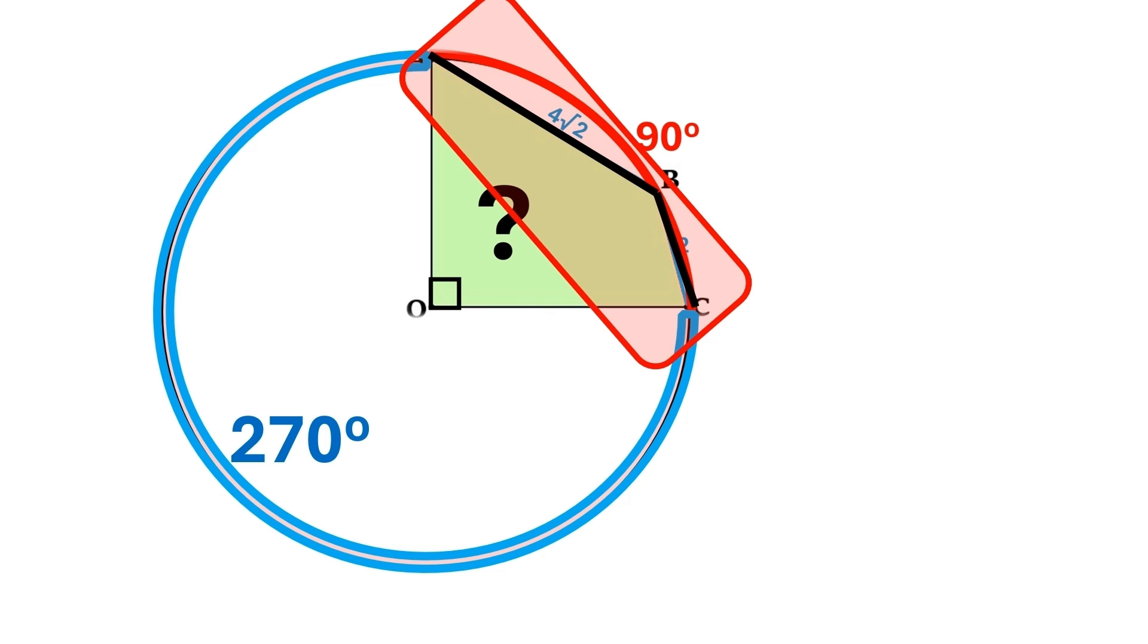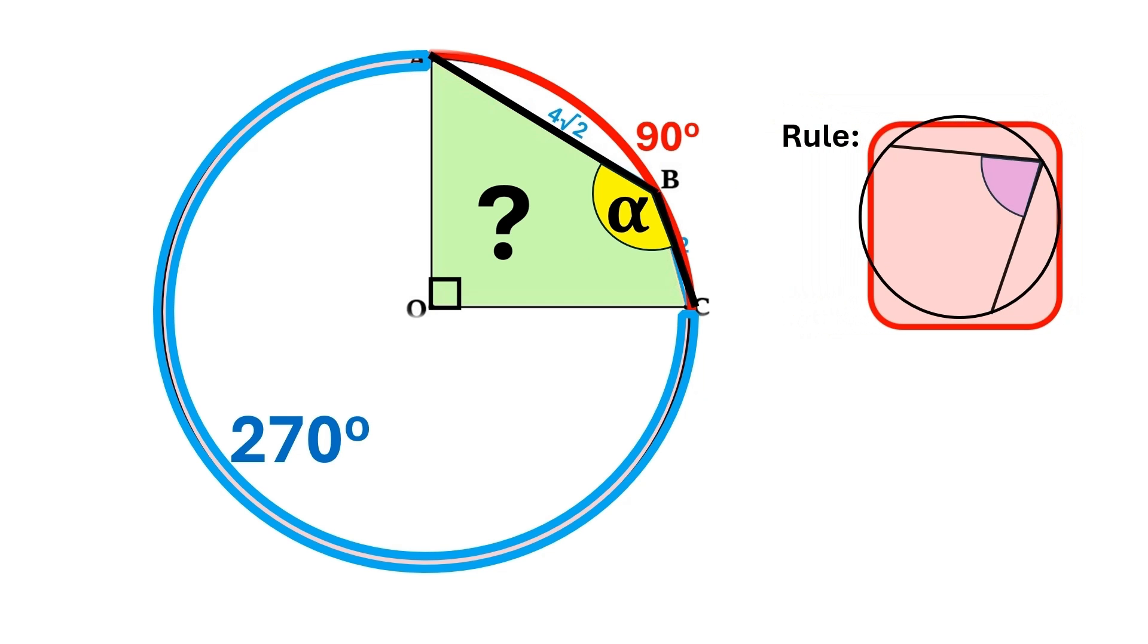Now, between these two chords, we have this angle alpha. One of the basic properties of circles is that when you have an angle touching a circle's edge from inside, and it is subtended by an arc of theta degrees, then the measure of that particular angle is always theta over 2.